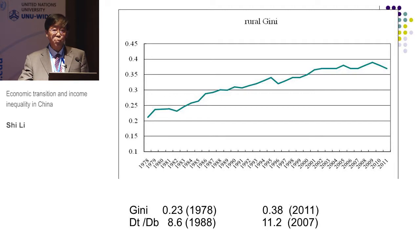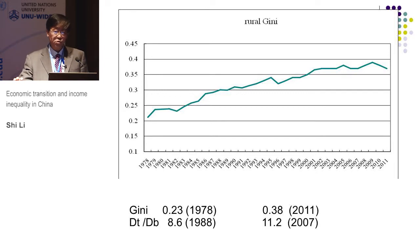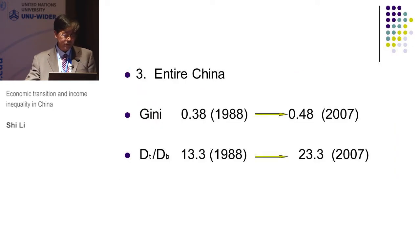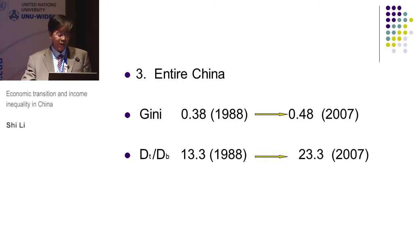You will find some similar patterns in rural areas. The Gini increased from 0.2 at the end of the 1970s to almost 0.4 in 2011. Also, the income ratio of the top decile to the bottom decile increased significantly. That is the income inequality situation in rural areas.